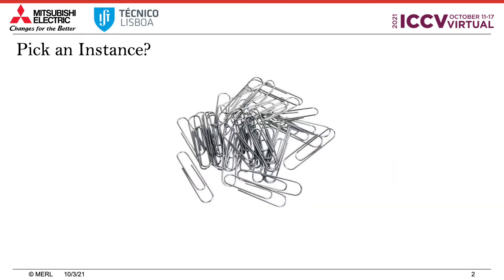Suppose you are given a bunch of paperclips and are asked to pick one instance. Humans can do this effortlessly even in clutter, because we have an idea of what a single paperclip would be and can thus disentangle an instance from the clutter. How can a robot do the same, especially to pick instances when there are no labeled training data or 3D object CAD models?